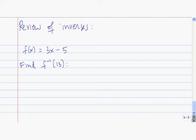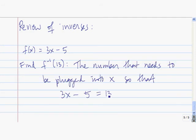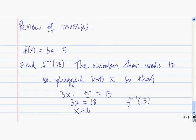I'll give you a quick review of the way inverses work. Suppose I have this function f of x equals 3x minus 5. I want to find f inverse of 13. This is equal to the value that I need to plug in for x so that the answer is 13. To find f inverse of 13, we need to solve for x. We start by adding 5 to both sides, getting 3x equals 18. Dividing both sides by 3, x equals 6. So f inverse of 13 is equal to 6, because 6 plugged in for x gives us 13.